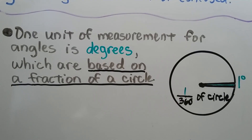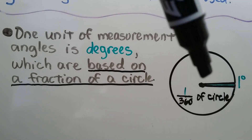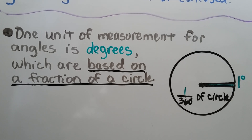One unit of measurement for angles is degrees, which are based on a fraction of a circle. Here we have one degree, and it's 1/360th of a circle.